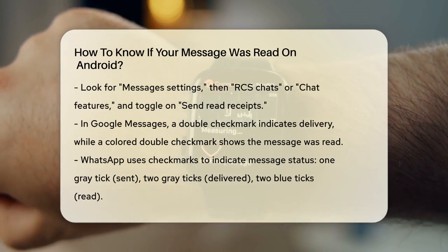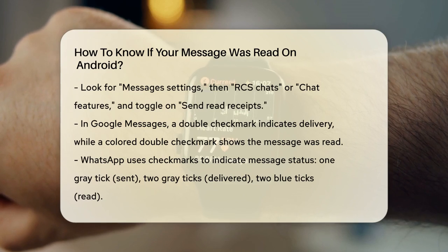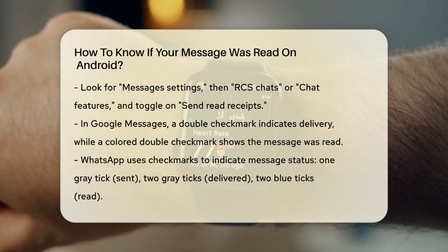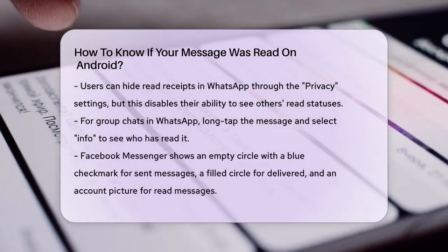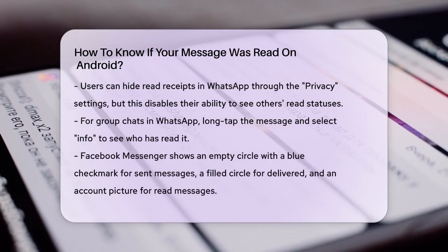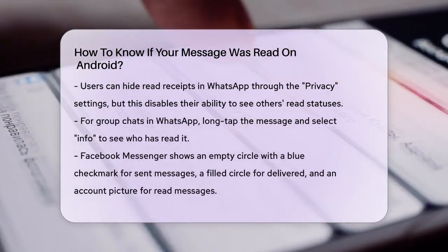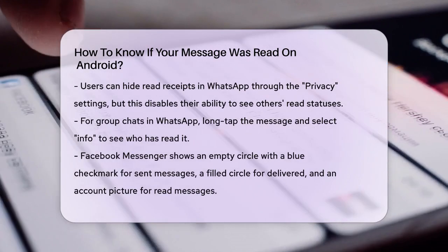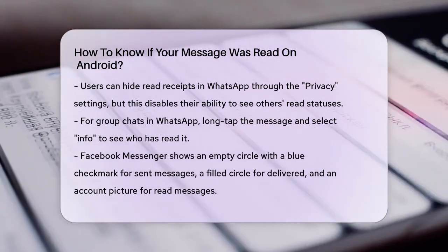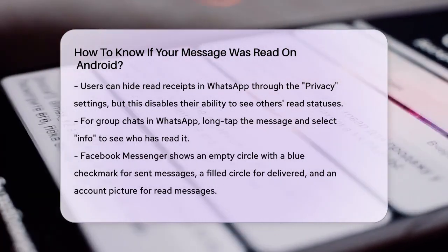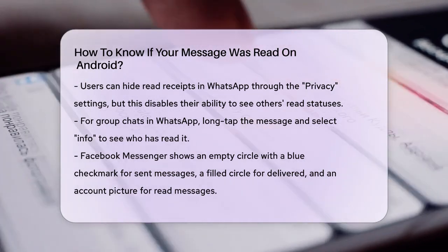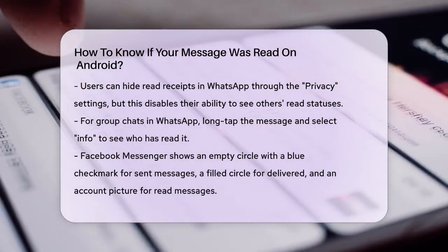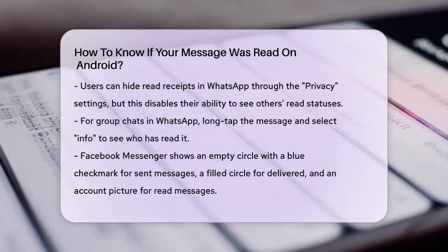If you want to hide read receipts on WhatsApp, you can do so by going to the Settings menu, then to Privacy, and turning off the Read Receipts toggle. However, this works both ways, so if you turn it off, you won't be able to see when others read your messages either. For group conversations on WhatsApp, you can check which members have read your message by long-tapping your sent message and tapping the Info menu at the top. This will show you detailed information, including the date and time each member read the message.